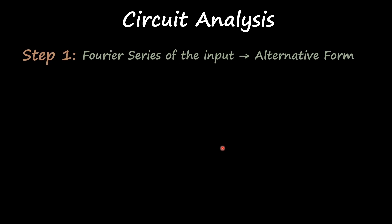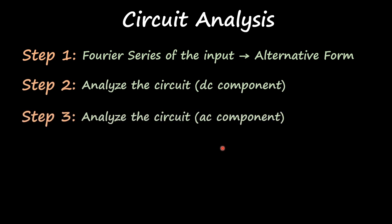We're going to have a set of steps that we're going to apply. Step number one: we're going to find the Fourier series of the input in that alternative form. Then we're going to analyze the circuit in DC, then we analyze the circuit in AC, and then we find the Fourier series terms. This is where we apply that superposition part. And then at last, we're going to plot and simulate our answer.